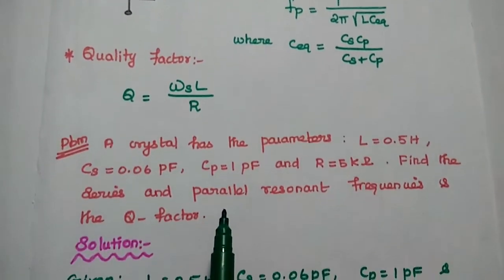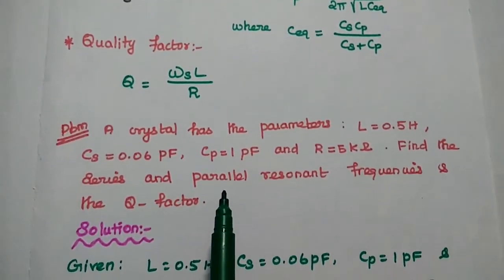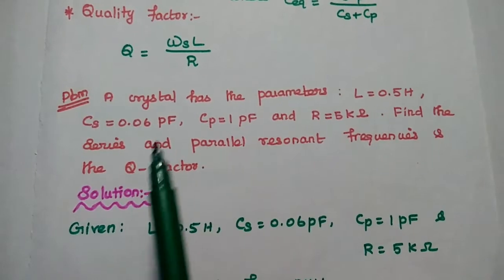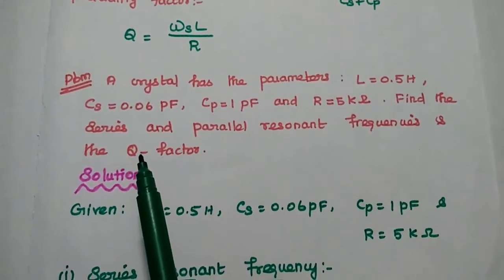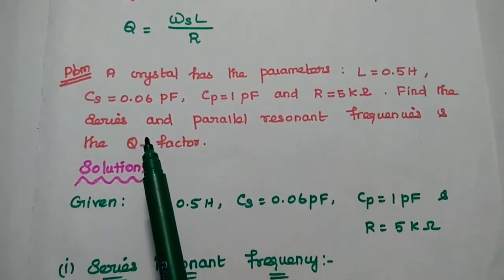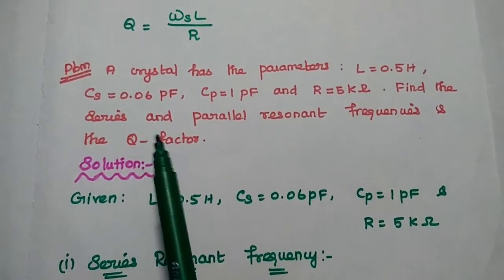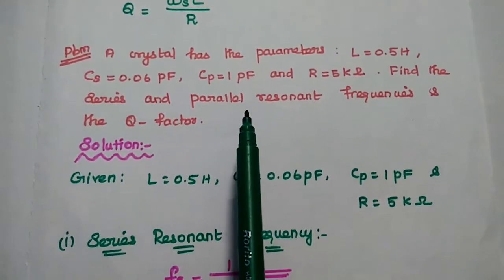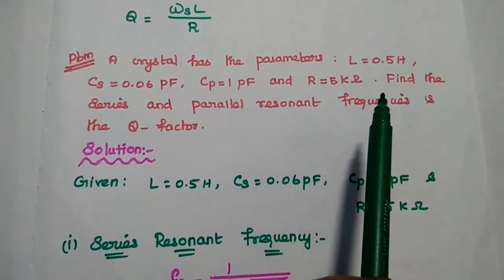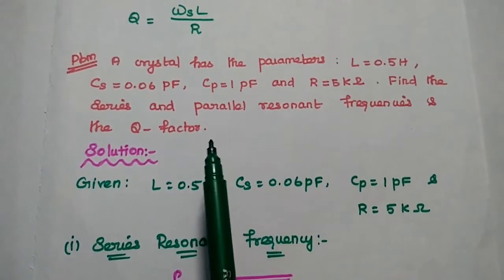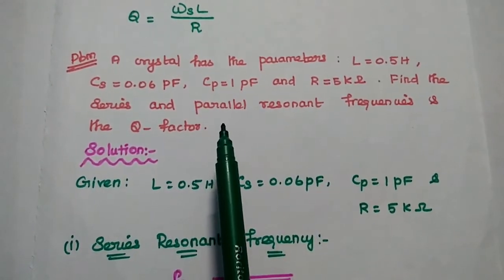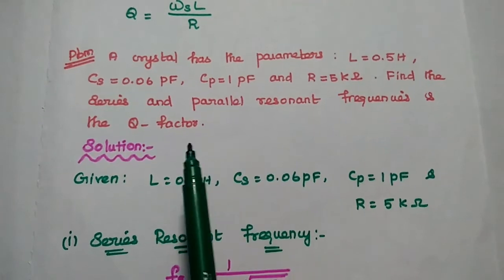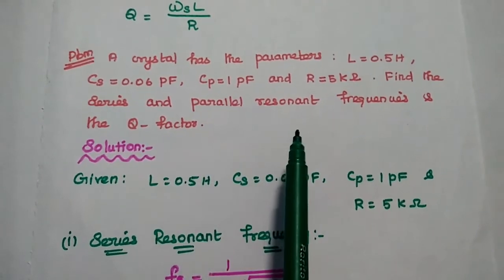Here is the first problem: a crystal has the parameters L equal to 0.5 henry, Cs equal to 0.06 picofarad, Cp equal to 1 picofarad, and R equal to 5 kilo ohm. Find the series and parallel resonant frequencies and the quality factor.